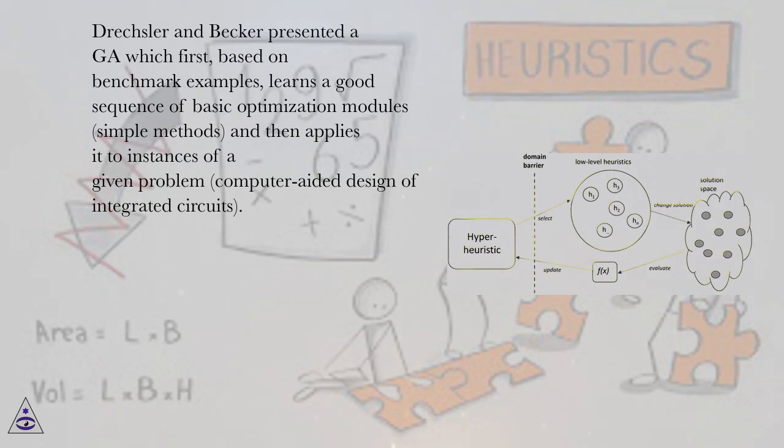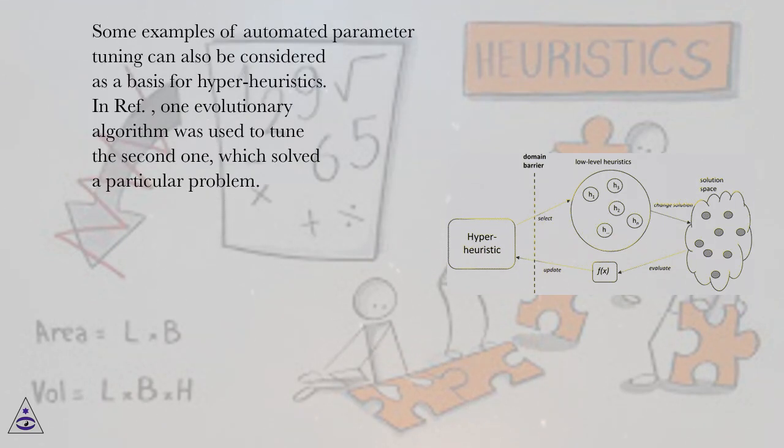Some examples of automated parameter tuning can also be considered as a basis for hyper-heuristics. In one example, one evolutionary algorithm was used to tune the second one, which solved a particular problem.